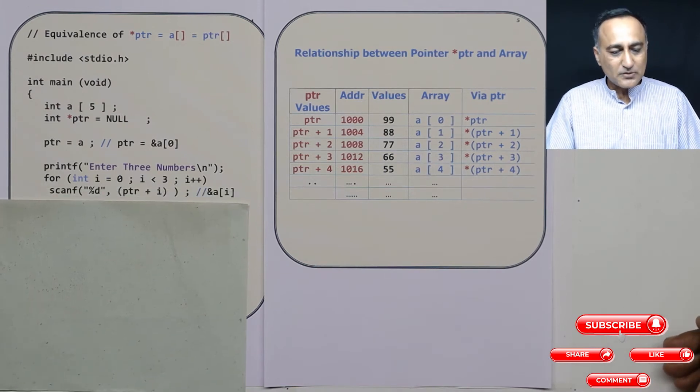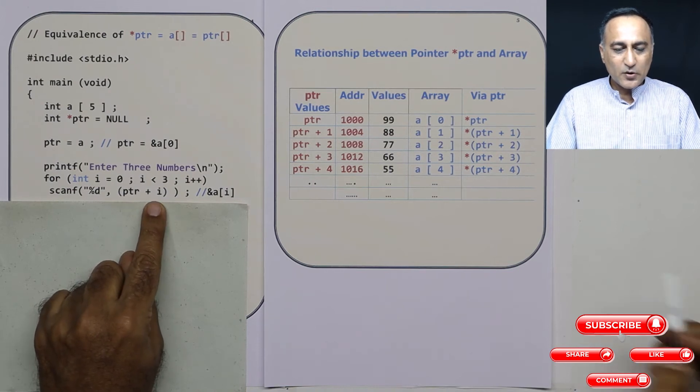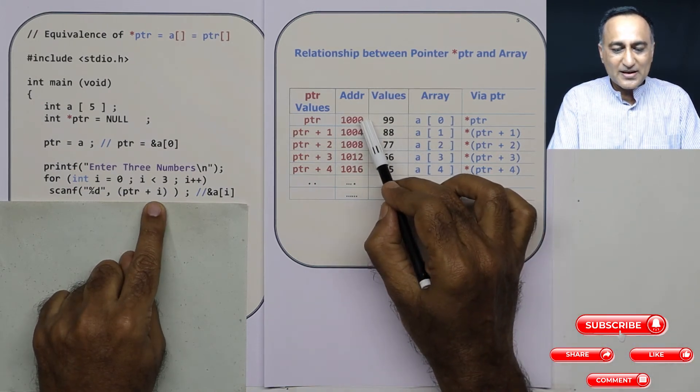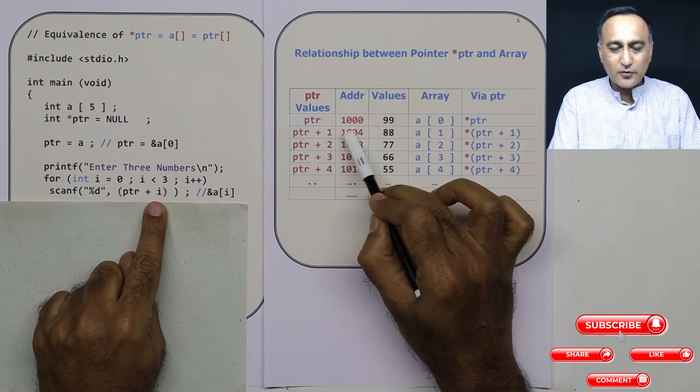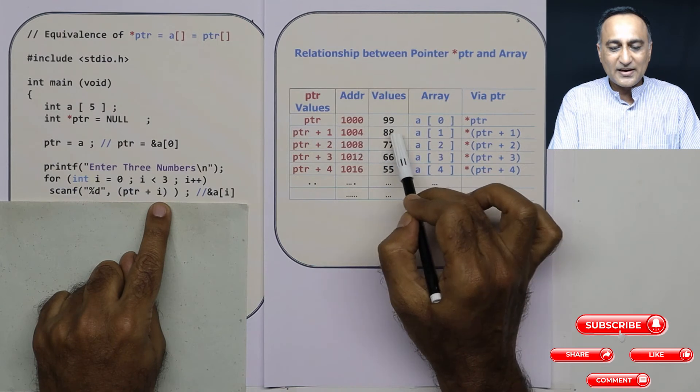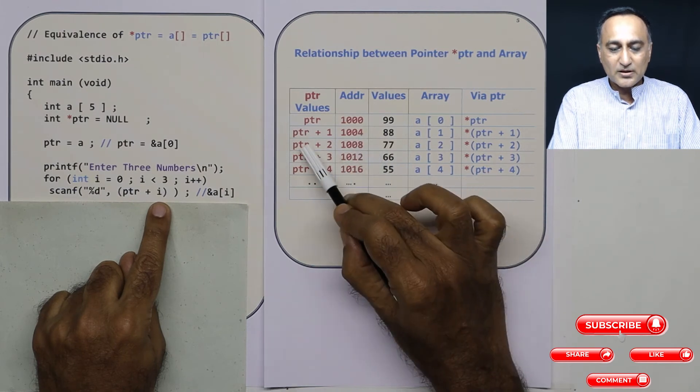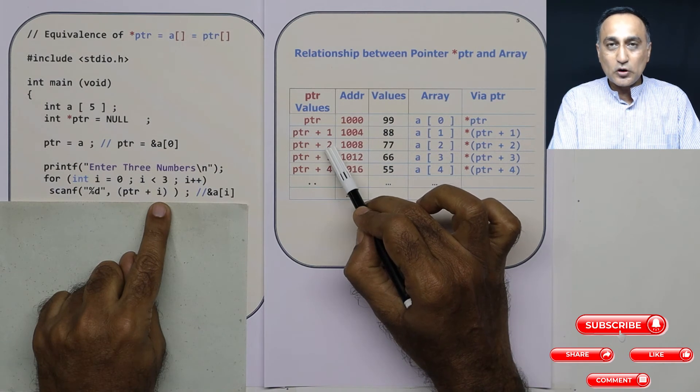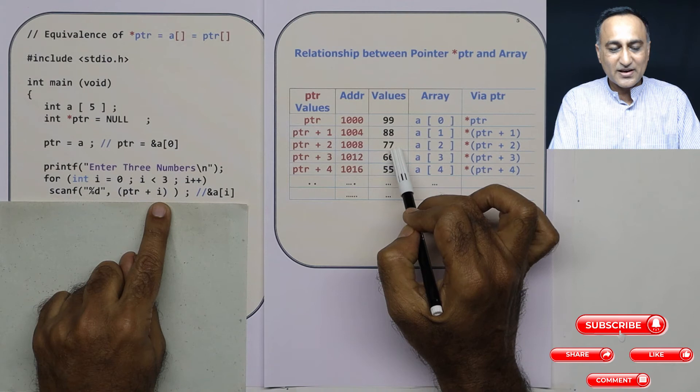So now I am doing scanf %d ptr plus i. When i is 0 I am referring to address 1000. When i becomes 1, 1000 plus 1 into 4 is 1004, the second 88 will go into 1004. When i becomes 2, 1000 plus 2 into 4 is 1008, at address 1008, 77 gets stored.